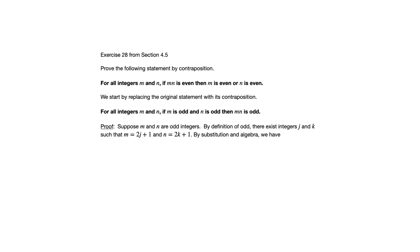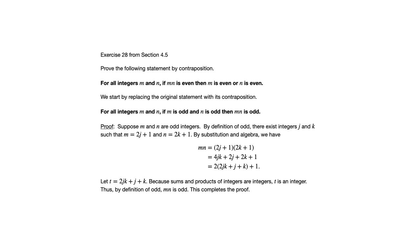So proof, suppose m and n are odd integers. By definition of odd, there exist integers j and k such that m equals 2j plus 1 and n equals 2k plus 1. That's our definition of odd. Now we do substitution, and this is going to look an awful lot like proofs that we've been doing all along in chapter 4. Because what we are doing is a direct proof of the contrapositive. So the style of proof is very similar to what we've been doing. The difference is that we began by taking the statement they are asking us to prove and rewriting it as the contrapositive, which we know is logically equivalent to the original. So we've got our algebra here. And that shows that m n by definition of odd is odd. And that completes our proof.